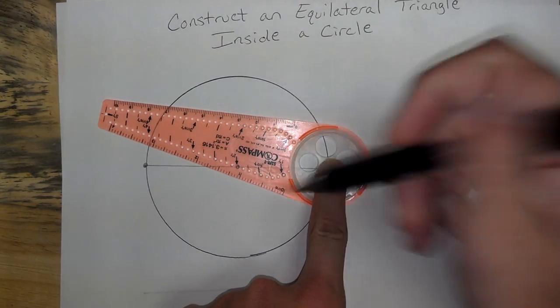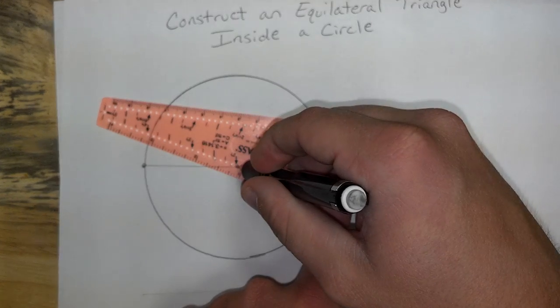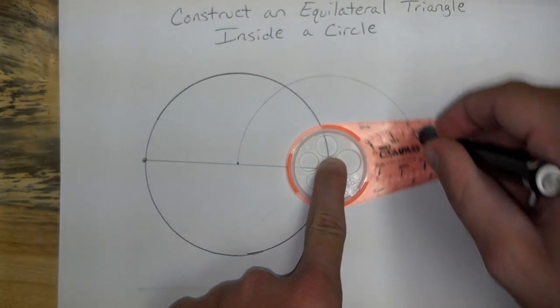Now, create a second circle that has the same radius. So, a circle over here.